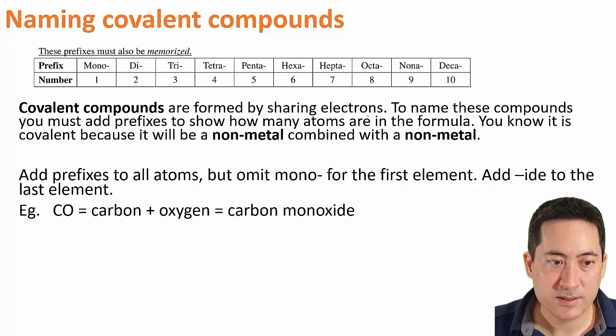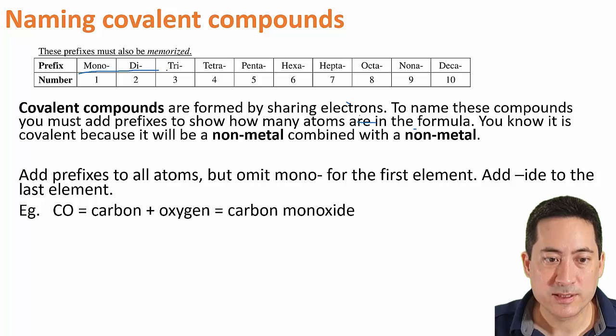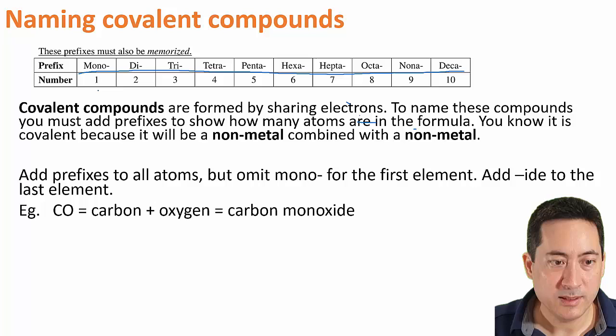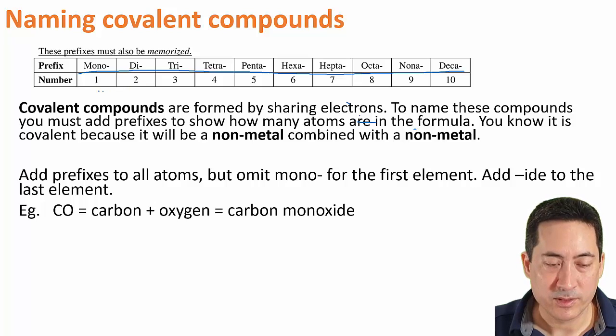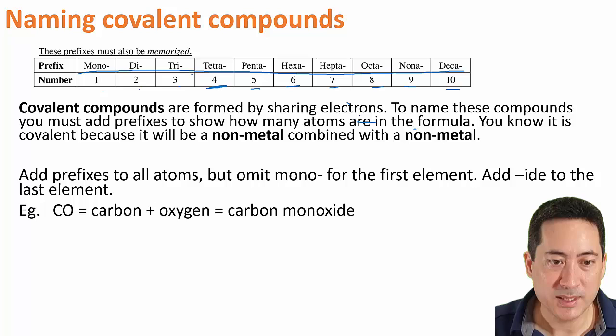And lastly, how to name compounds. You'll need to be able to memorize these, which are different to the 1, 2, 3, 4, 5, 6, 7, 8, 9, 10 of your hydrocarbons. So your hydrocarbons will be methane, or if I do it as an alkane, methane, ethane, propane, butane, pentane, hexane, heptane, octane, nonane, and decane. They're very similar.